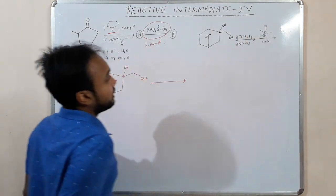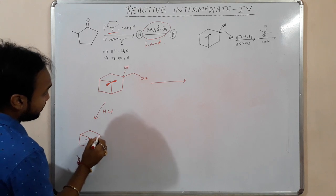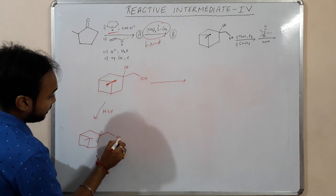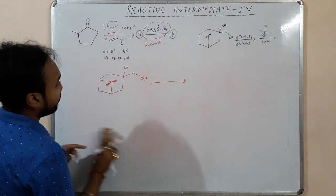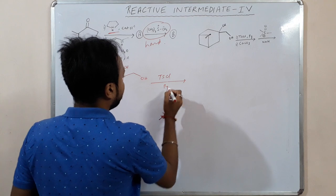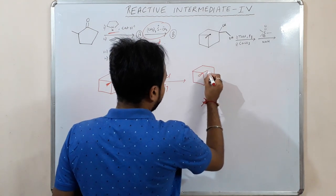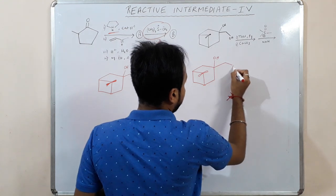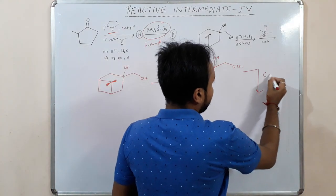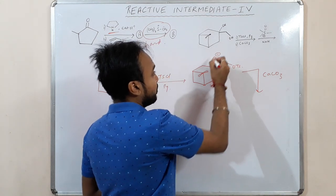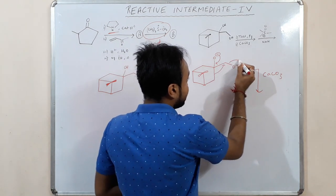If we give HCl, then formation of a carbocation would occur there. But since we have used tosyl chloride in the presence of pyridine, it will form OTs on the primary alcohol, not on the tertiary or secondary alcohol. Calcium carbonate, which is a base, will abstract the proton, a double bond will form, and OTs will leave.